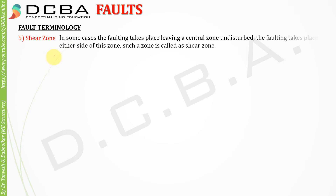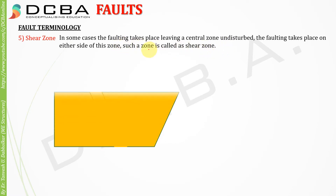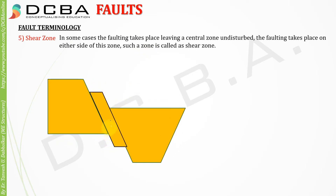Shear zone: in some cases, the faulting takes place leaving a central zone undisturbed — the faulting takes place on either side of the zone. Such a zone is called a shear zone. Here we have two distinct fault planes forming on either side, and the blocks are moving relative to each other relative to those fault planes.